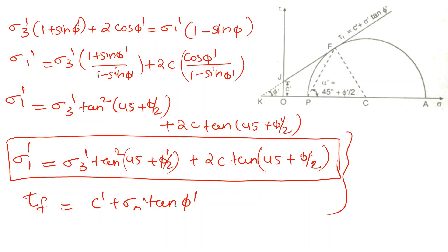I will tell you about the maximum principle stress and the minor principle stress and the principle stresses. I will tell you about the shear parameters. This equation is a very important relationship between the shear parameters and the principle stresses. In the lab I will do an experiment — you will obtain the values of sigma and tau, and from those determine the cohesion c and phi values.